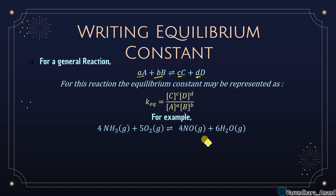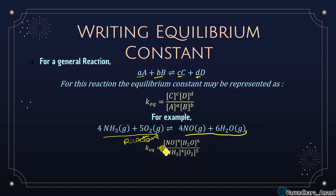For the reaction 4NH3 + 5O2 ⇌ 4NO + 6H2O, we write products in the numerator and reactants in the denominator. So Keq = [NO]^4 · [H2O]^6 / ([NH3]^4 · [O2]^5). Since this is expressed in terms of concentration, this equilibrium constant can also be written as Kc.